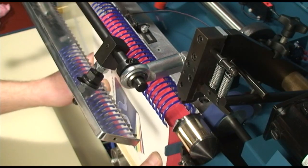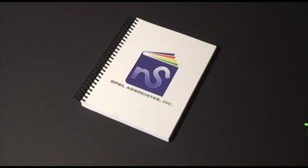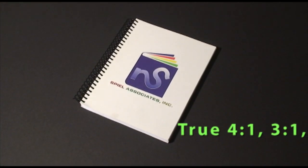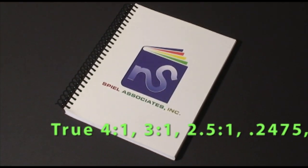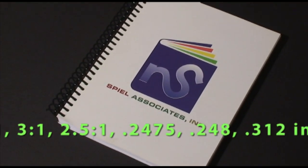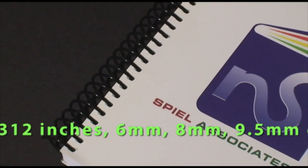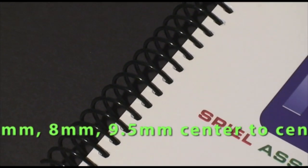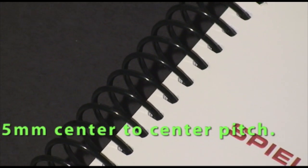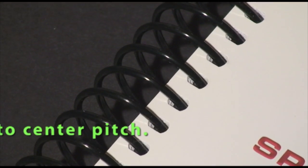Order the machine with the pitch you prefer. A true 4-to-1, 3-to-1, 2.5-to-1, 0.2475, 0.248, or 0.312 inches, 6 millimeters center-to-center, 8 millimeters center-to-center, or 9.5 center-to-center pitch.